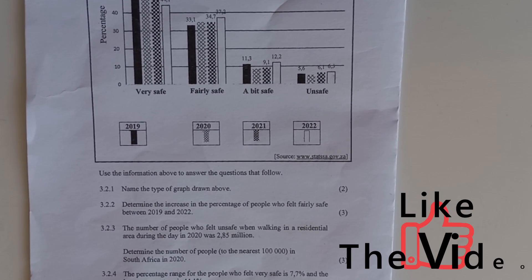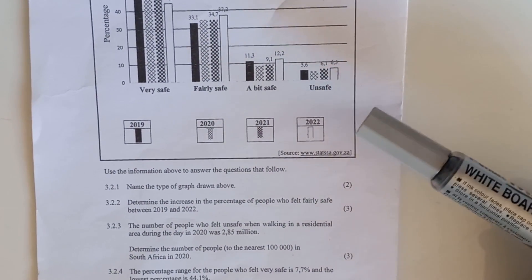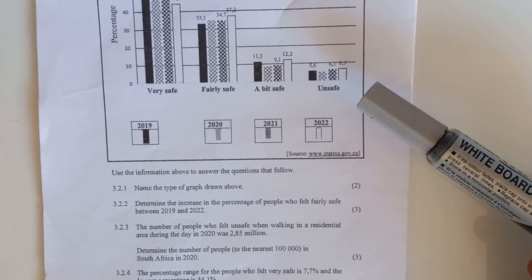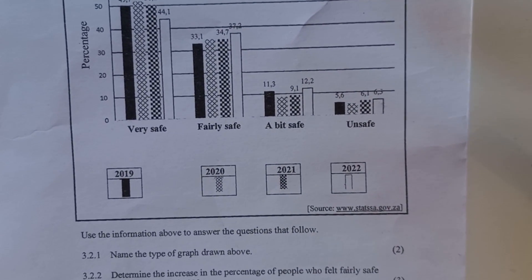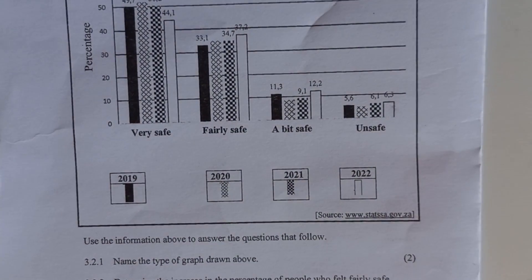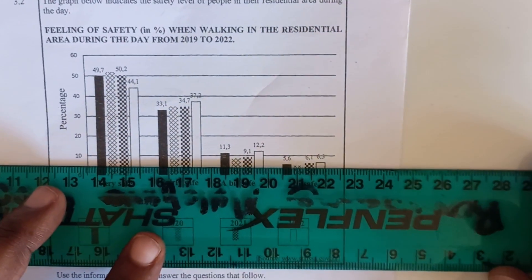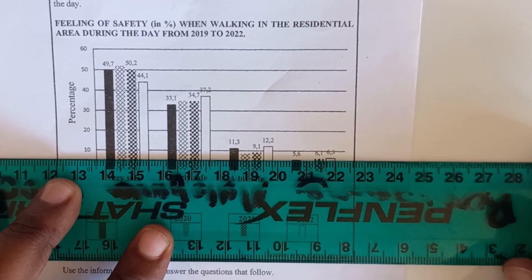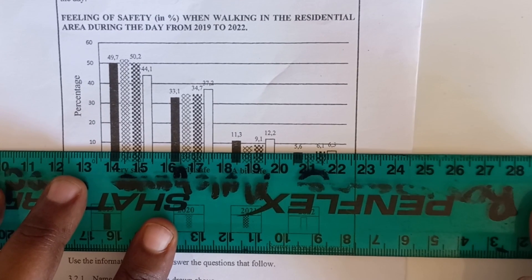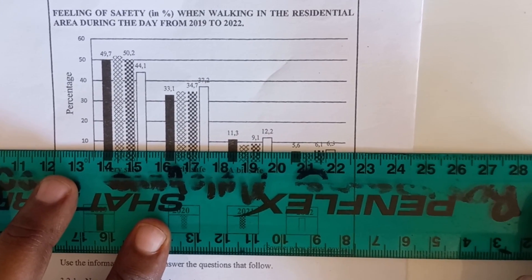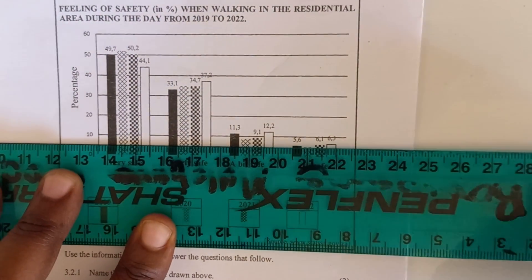When you look at that year they did not write the percentage for you. So you need to figure out the percentage first before you can start calculating. It should be less than 5.6. It should be less than 6.1 because 2019 is 5.6 and 2021 is 6.1. When you put your ruler here you can see that you are just below the halfway mark. So I'm going to use 4.8.